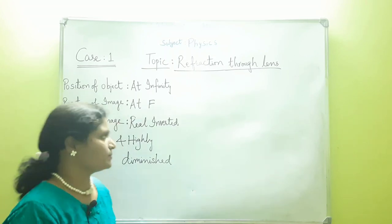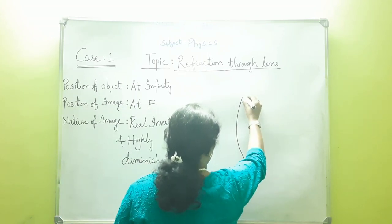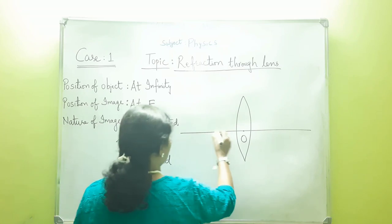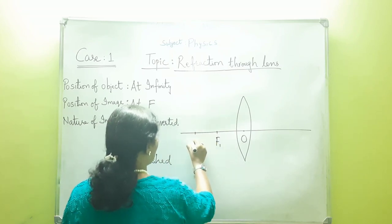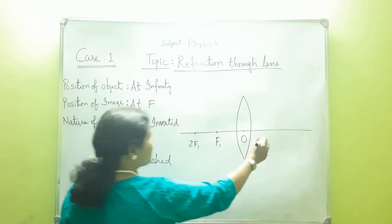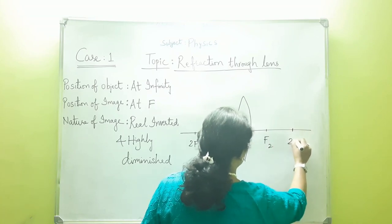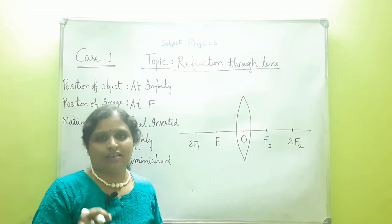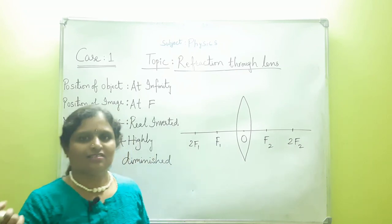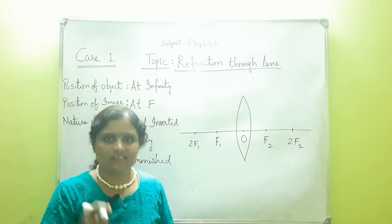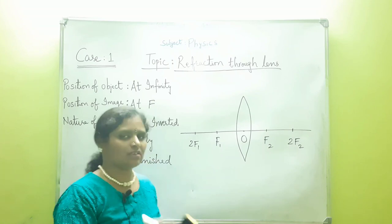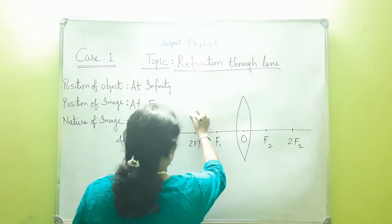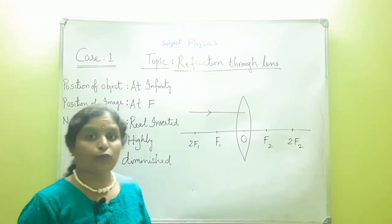Let us draw the ray diagram for case 1. This is the convex lens, and I am drawing the principal axis and marking the optical center. Here I am marking F1 and 2F1 on one side of the lens, and on the other side I am marking F2 and 2F2. When we perform the experiment, we measure the focal length by focusing a distant object and measuring the distance between the optic center and the focus.